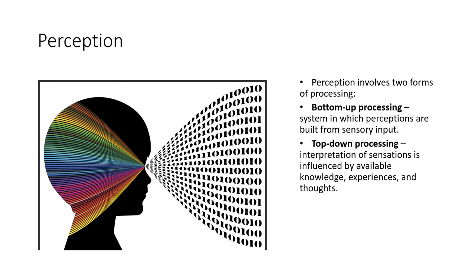Top-down processing is the interpretation of sensations, influenced by our available knowledge, experiences, and thoughts. For example, if I were to smell gas in my home, bottom-up processing might lead me to just notice something unusual. But top-down processing allows me to interpret that — perhaps because I've heard about the smell of gas, know someone who had a gas leak, or saw something on TV — basing it on my experience, previous knowledge, or things I've thought about before.